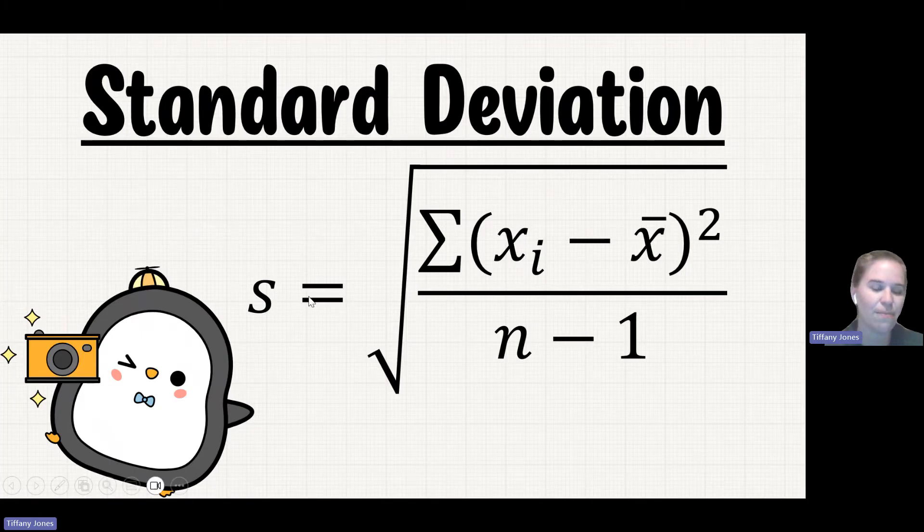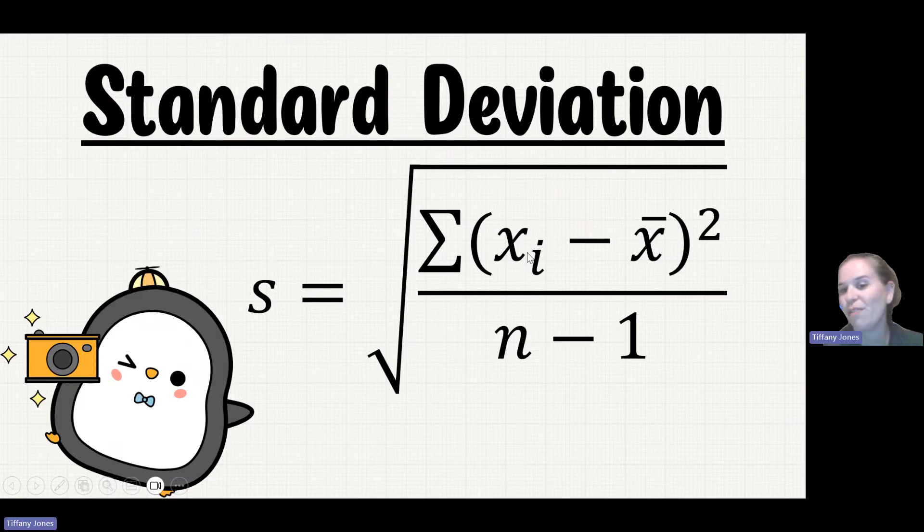S is my standard deviation, equal to the square root of my individual values minus my mean squared. So we're gonna take each of those differences, square them, and then we're gonna add all those differences together and take that whole thing and divide by the number of samples I have minus one.